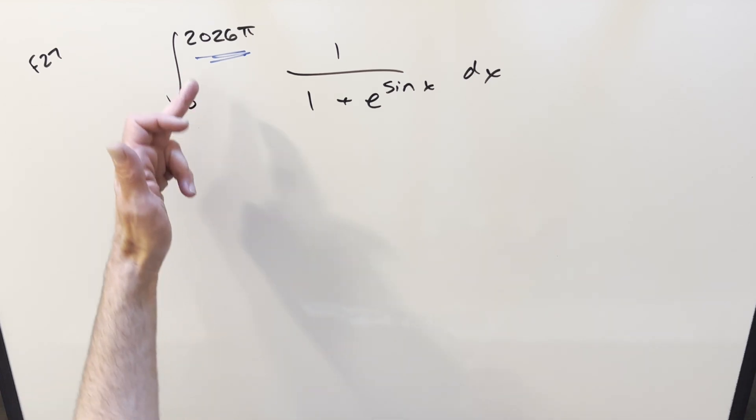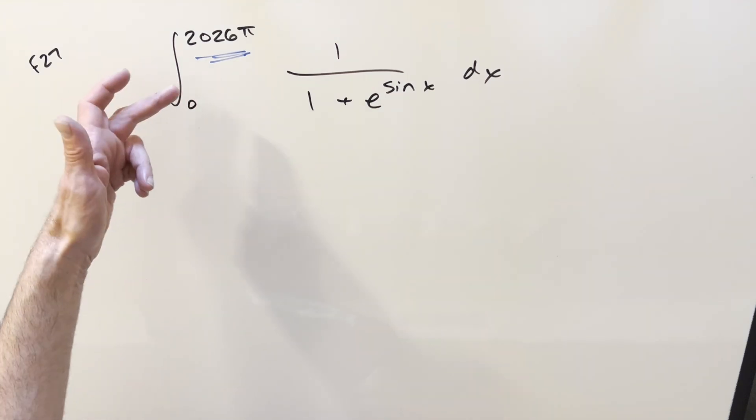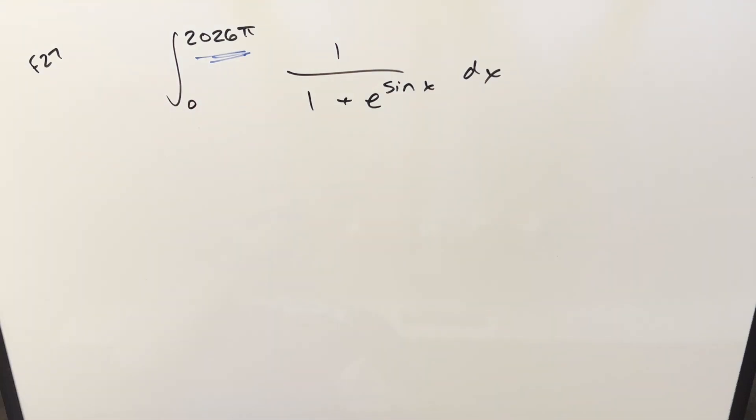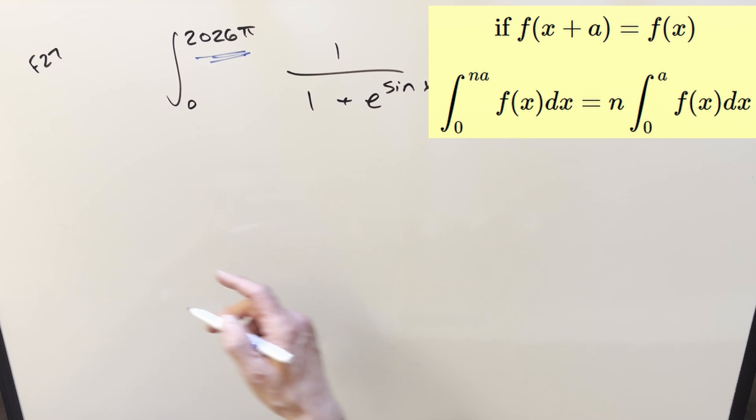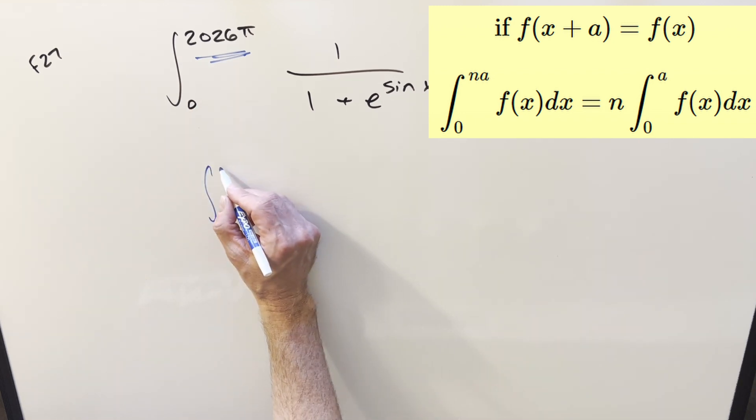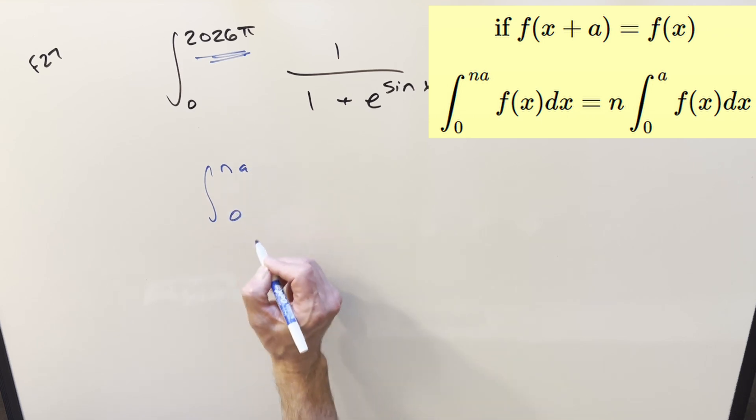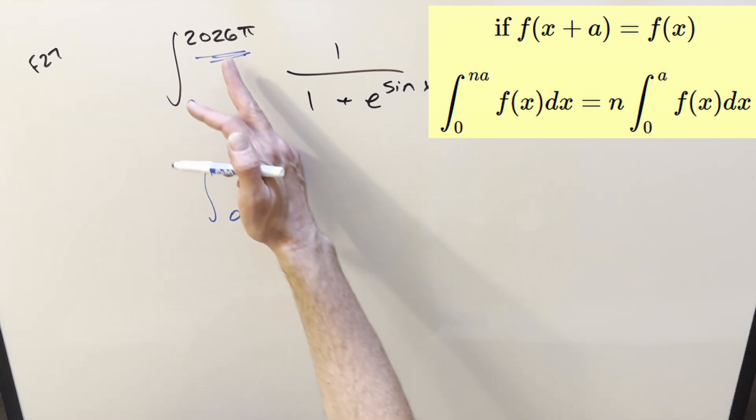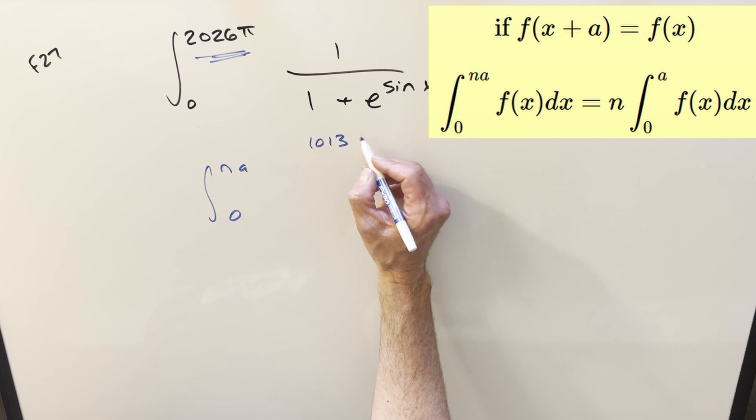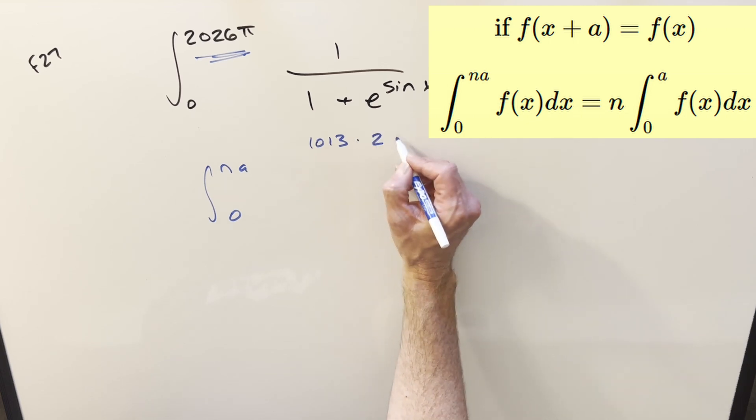To get started, the question is do you want to reduce the bounds or not? It's not going to matter very much - you could leave it and it's fine with a trig identity, or you can reduce it now. Let's reduce it now. We have the formula where we can reduce that when we've got an integral that we break up. If we have an integral like 0 to Na, the way I want to break up 2026π is we'll write it as 1013 times 2π.